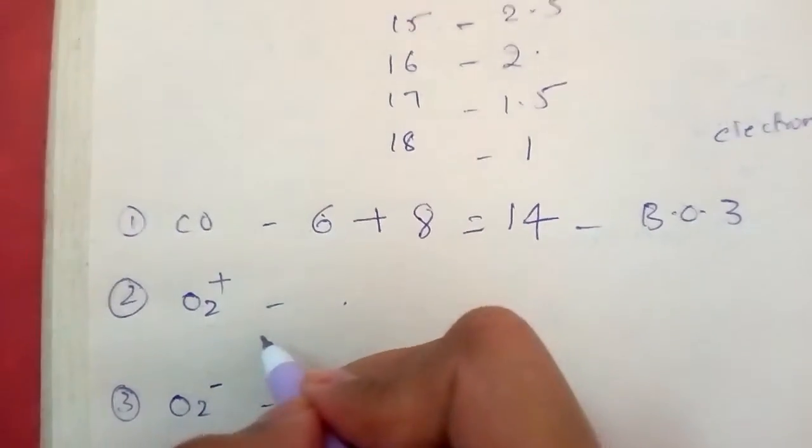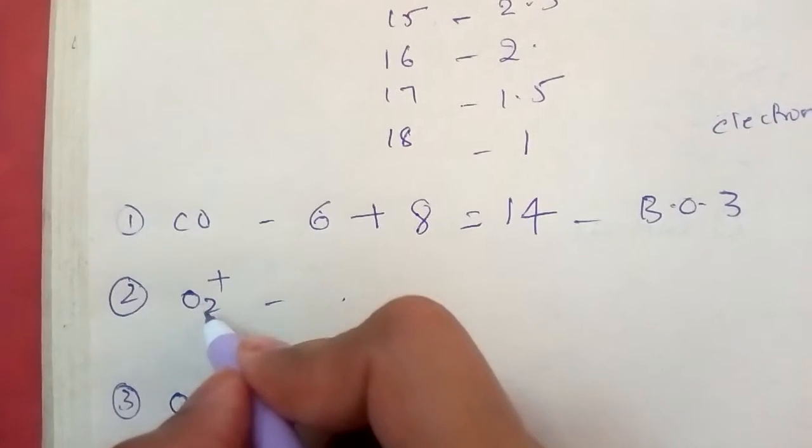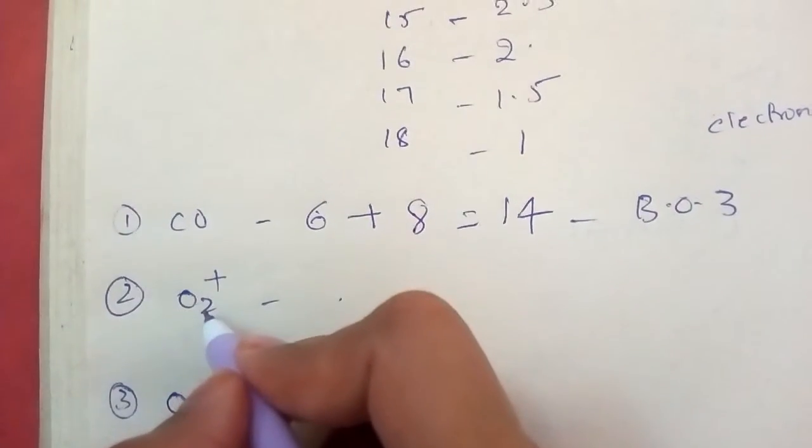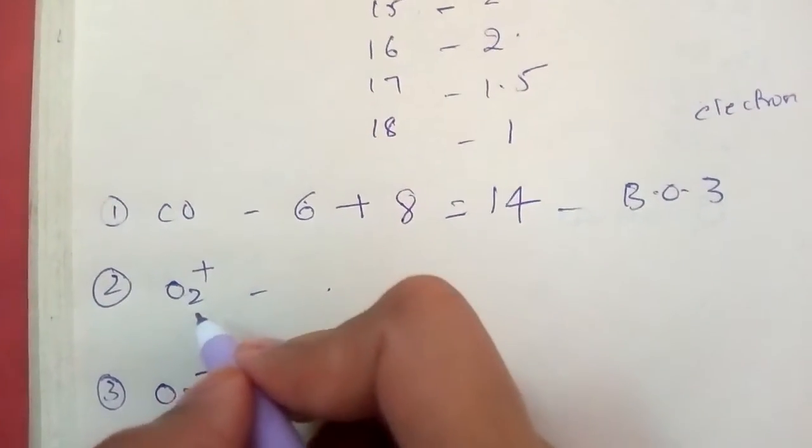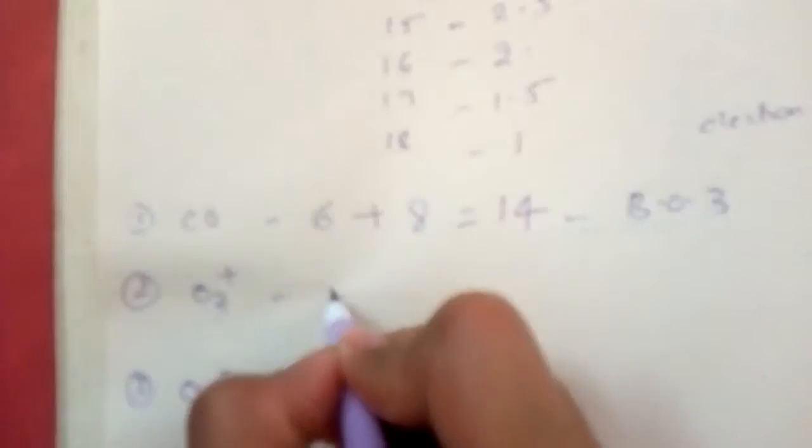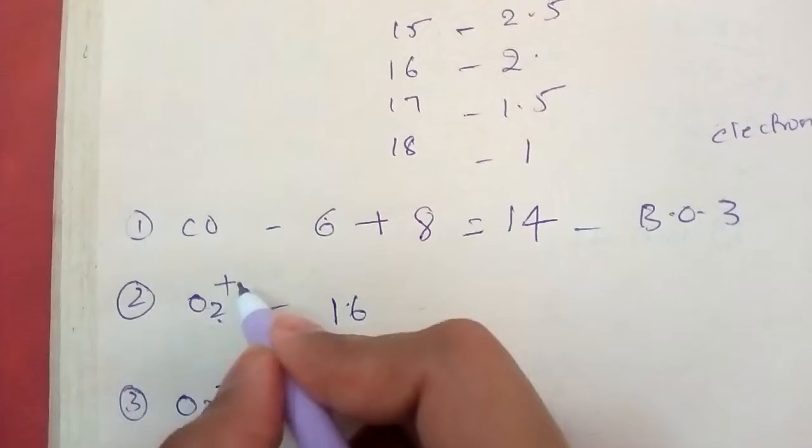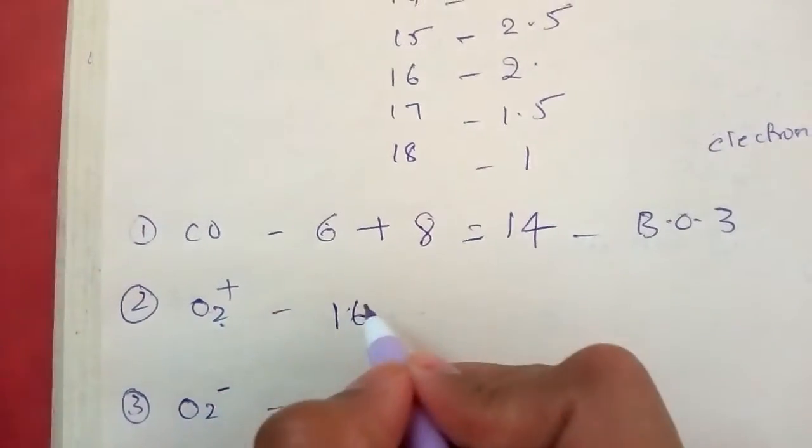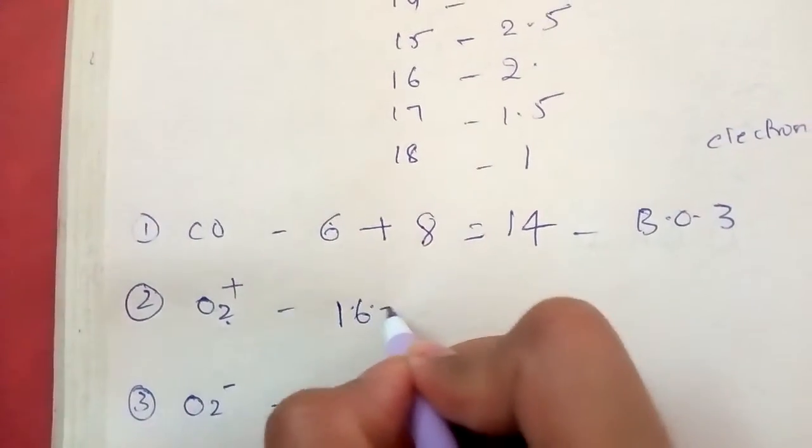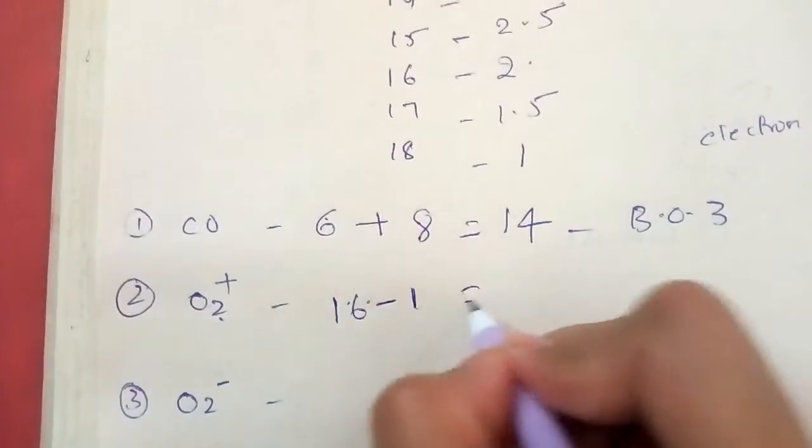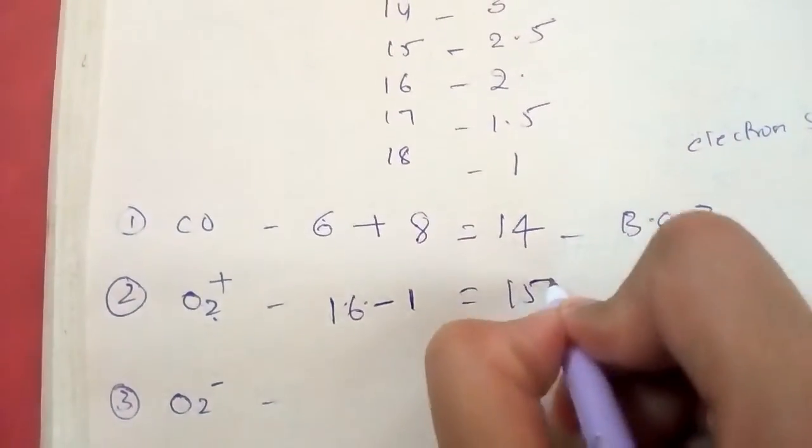O2 plus. For example, you have 2 oxygen atoms. Then how many electrons? 16 electrons. And here is given 1 electron was removed. Then it achieved plus sign. So you have to remove 1 electron from this. 15. Then its bond order became 2.5.